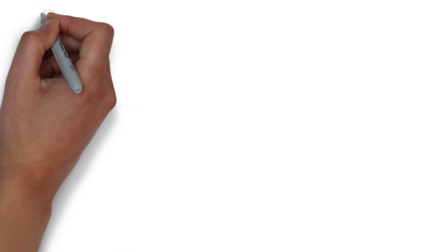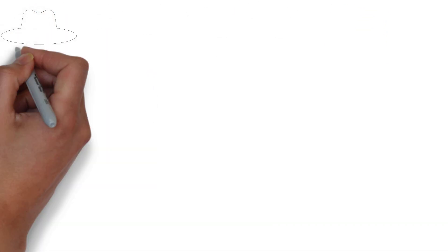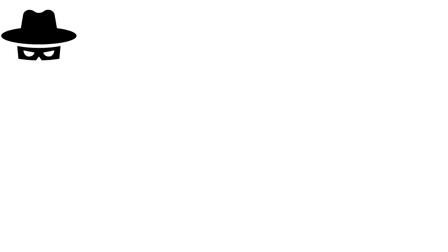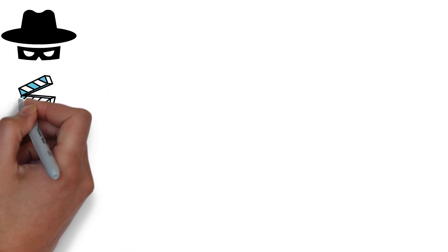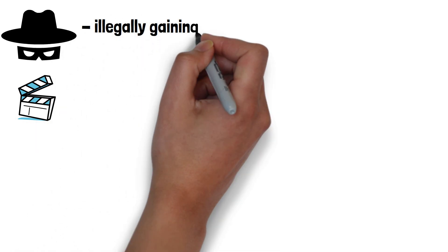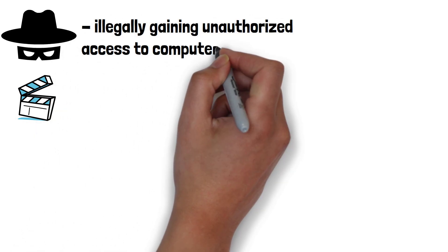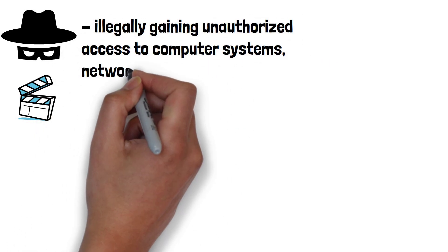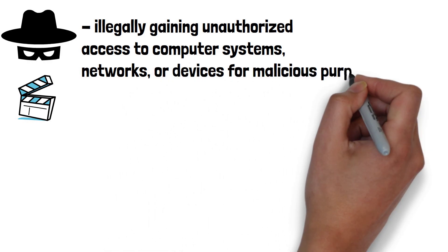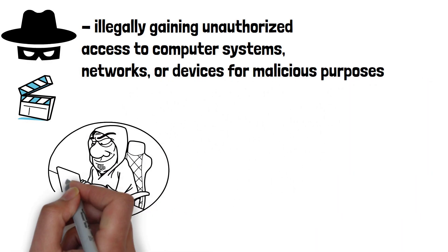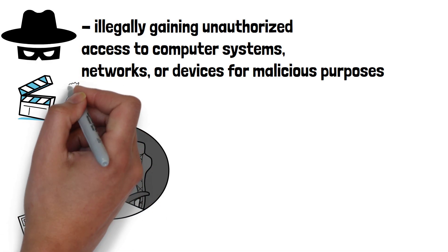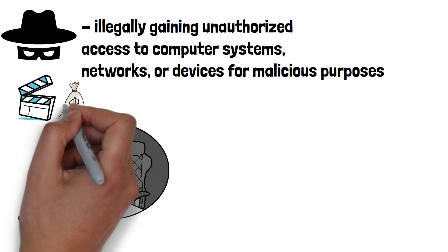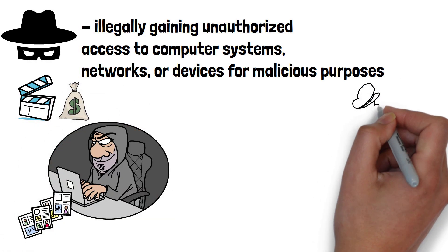Let's start with black hat hacking. This is the one that's often portrayed in films and TV shows. Black hat hacking refers to the practice of illegally gaining unauthorised access to computer systems, networks or devices for malicious purposes, such as stealing data, causing damage or financial gain. Black hat hackers operate without permission and violate laws.